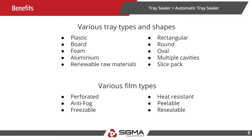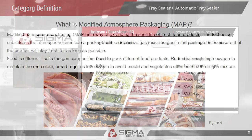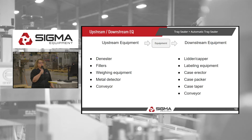I wanted to touch on modified atmosphere packaging, or MAP system. This basically extends the shelf life of fresh foods. The gas in the package helps ensure it stays fresh for as long as possible. For example, red meat requires a high oxygen level to keep that red color, bread requires low oxygen, and vegetables typically use a mixture of gases to keep them fresh.